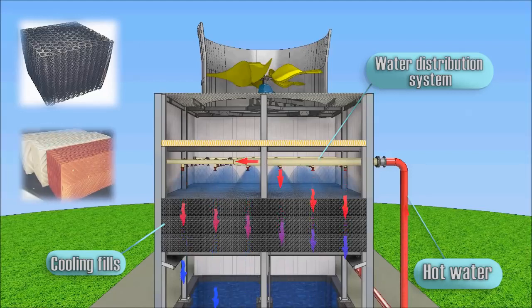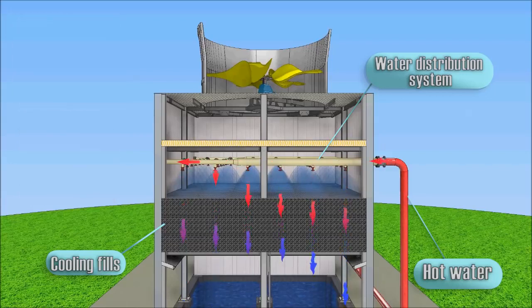On the fills, a water film is formed from the surface of which evaporation of water encounters air flow. The larger the surface area of the fills, the more intensive is the evaporation of water and the more efficient is the cooling tower.